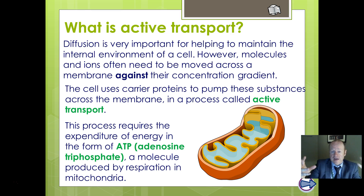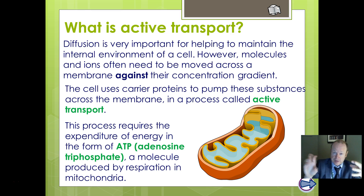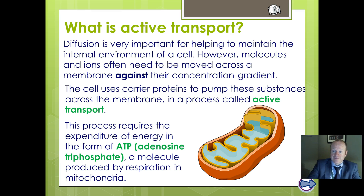ATP has adenine and phosphates, and it's the multiple phosphate bonds that form the energy storage area. The energy is stored in the bond between one phosphate and the next, and ATP is made by mitochondria.